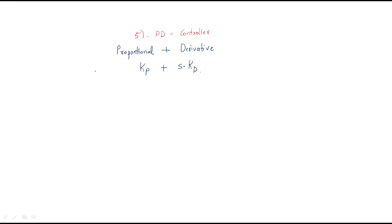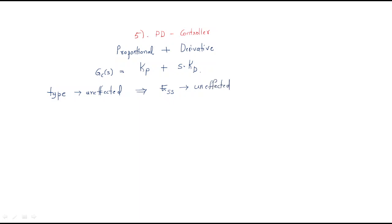If you observe the controller gain, first look at the type. The type here is unaffected — there is no change — because we don't have any denominator S terms. Since type is related to steady state error, the steady state error is also unaffected.